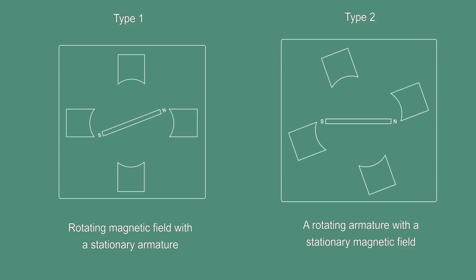Most alternators use a rotating magnetic field with a stationary armature. Now we are going to see the functioning of type 1 alternator.